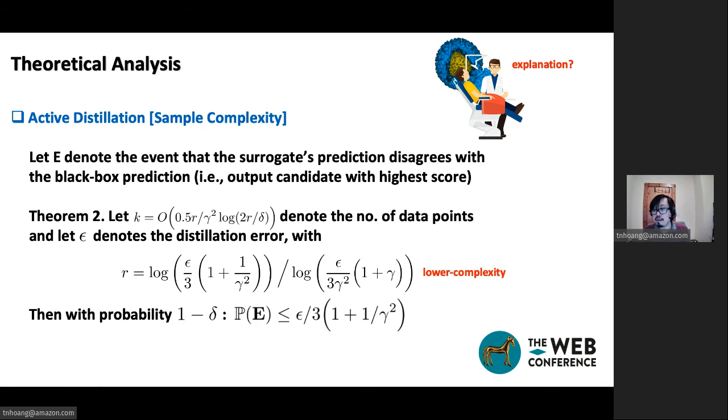Now, on the other hand, our theoretical analysis shows that for active distillation, the required query complexity is actually much fewer than the required query complexity in the passive distillation setting. So this confirmed our intuition earlier that active distillation makes better use of data, because in the end, to guarantee the same upper bound on the disagreement probability, active distillation is shown to require fewer queries in the worst case. So this is our key result showcasing the efficiency of the active distillation.